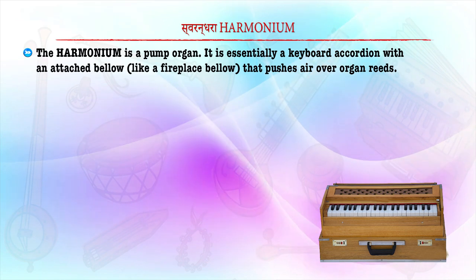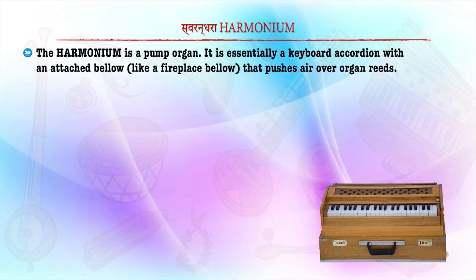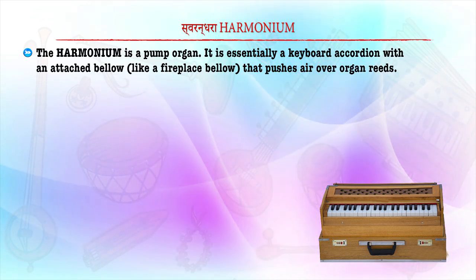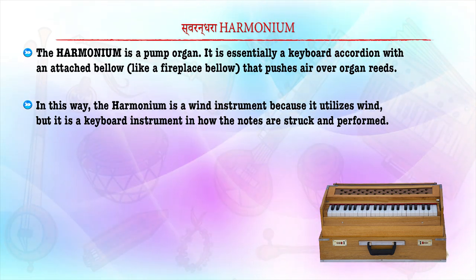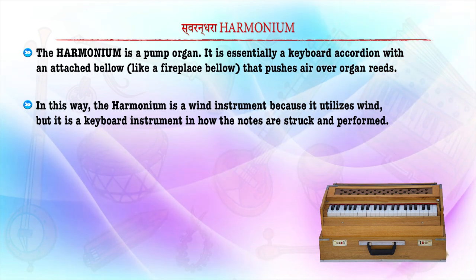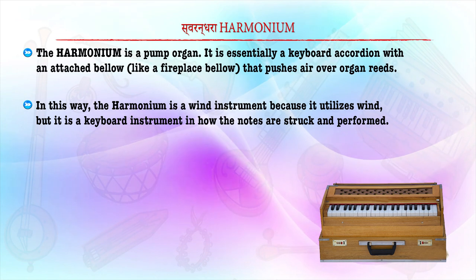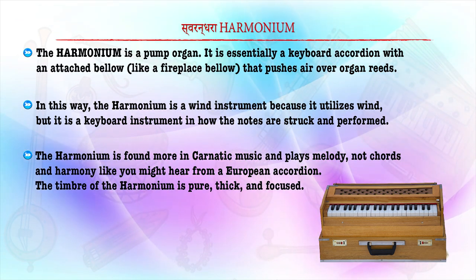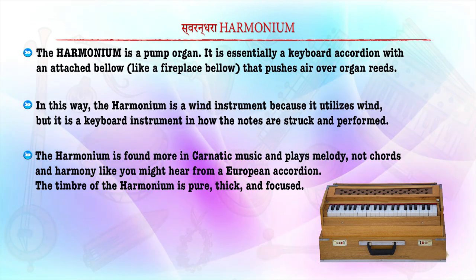Then we have the harmonium. It is essentially a keyboard with an attached bellows that pushes air over organ reeds, making it a wind instrument because it utilizes wind. However, it is also a keyboard instrument where the notes are struck and performed. The harmonium is found more in Karnatic music and plays melody, not chords and harmony. The timbre of the harmonium is pure, thick and focused.